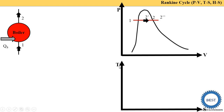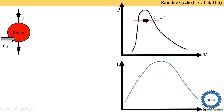Now we draw the TS diagram, where T (temperature) is on the y-axis and entropy is on the x-axis. Similar to the PV diagram, there is one saturation curve, though the shape is different. The critical point is the same: from it, the left side indicates the saturated liquid line, the right side the saturated vapor line, and the area between them is the mixing region.